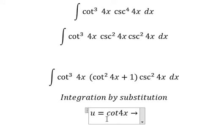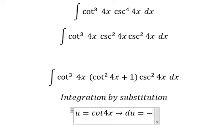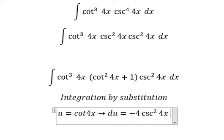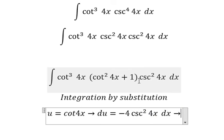If I take the derivative of both sides, we have du equals negative 4 csc²(4x)dx. Because we don't have the negative 4, we need to divide both sides by negative 4.